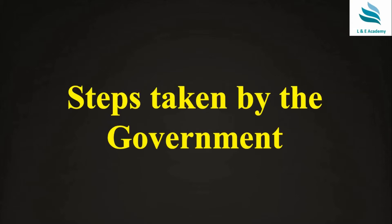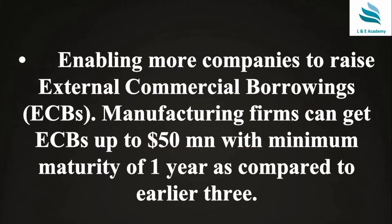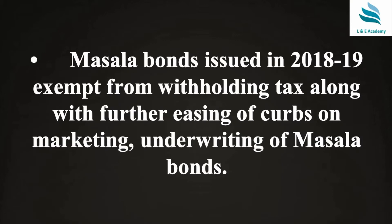What are the steps taken by the government? The government is enabling more companies to raise external commercial borrowings. Manufacturing firms can get external commercial borrowing up to 50 million dollars with a minimum maturity of one year, compared to the earlier requirement of three years. Masala bonds issued in 2018–19 are exempted from withholding tax, along with further easing of curbs on marketing and underwriting of masala bonds.